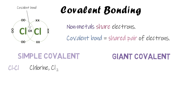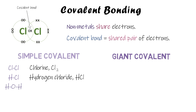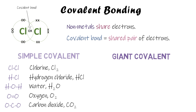Simple covalent molecules are things like Cl2, hydrogen chloride, water, oxygen, and CO2. You can see these are all elements or compounds that contain one, two, three, or maybe four atoms — just a few. When you've got just a few atoms in a molecule, that's a simple covalent molecule.